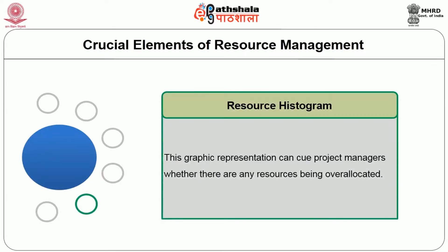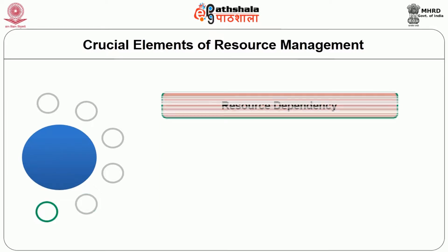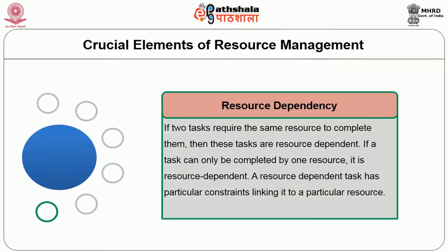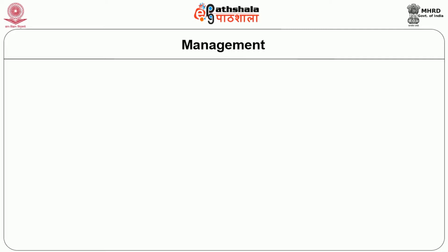The Resource Histogram is a graphic representation that can cue project managers to whether any resources are being over-allocated. Next is resource dependency: if two tasks require the same resource to complete them, then these tasks are resource dependent. If a task can only be completed by one resource, it is resource dependent. A resource-dependent task has particular constraints linking it to a particular resource.